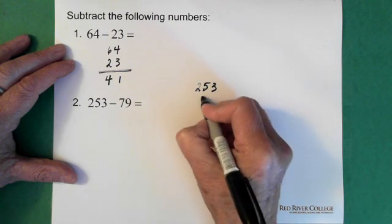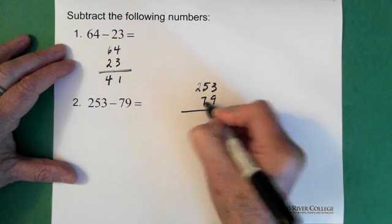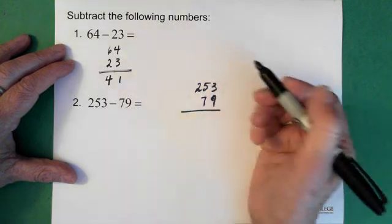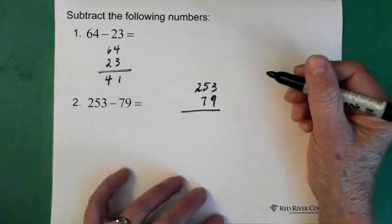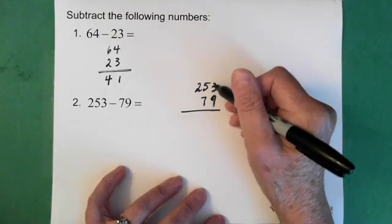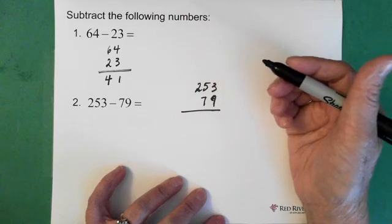253 minus 79. Now it's always this question, or these kinds of questions where we are glad we often have calculators. So what we do here is we see we have 3 minus 9, which we know we can't do.